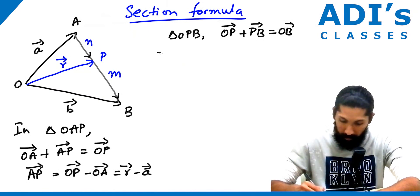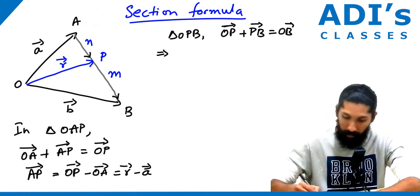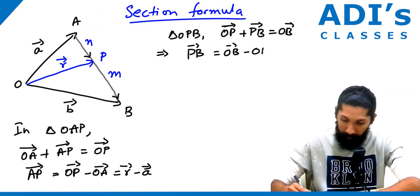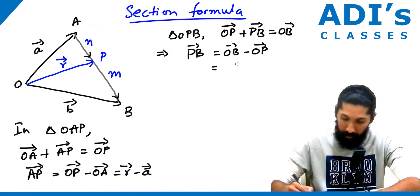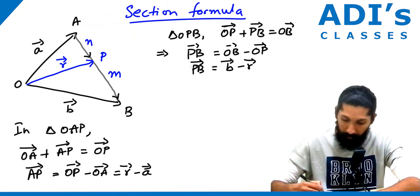So PB equals OB minus OP, which gives us vector B minus vector R.